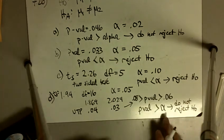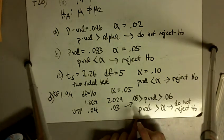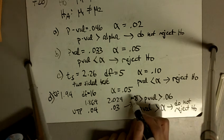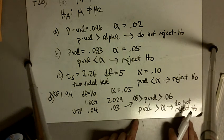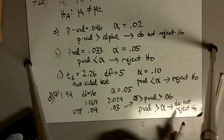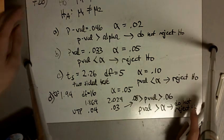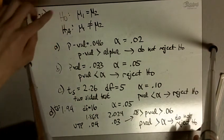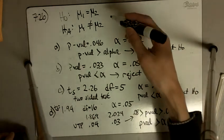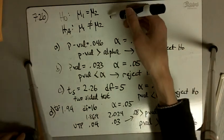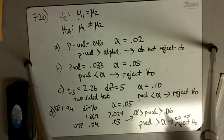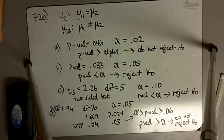Based on the significance level we've chosen — alpha = 0.05 — we do not reject the null hypothesis. We don't have enough evidence to say that μ1 is different from μ2, so we cannot reject the idea that μ1 equals μ2.